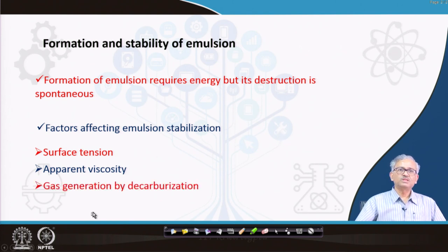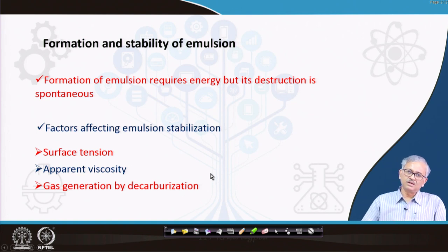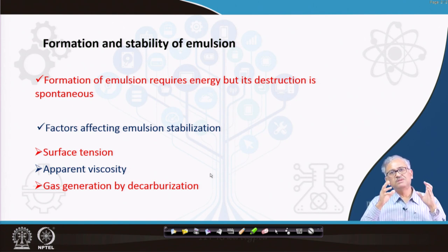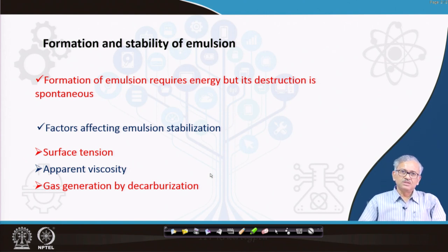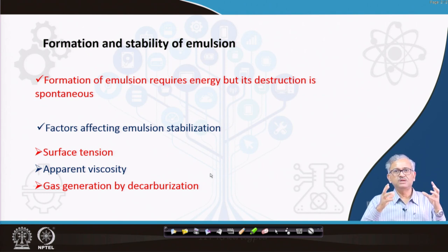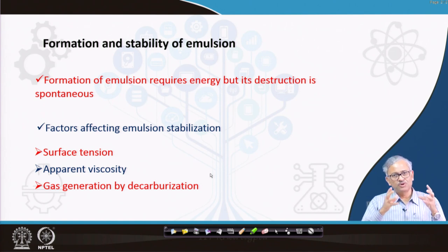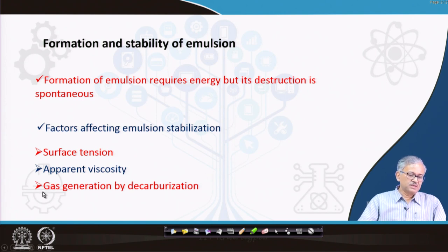The third and most important stabilization factor is gas generation by decarburization. When the bath is decarburized, CO bubbles form and stabilize the foam. Continuous supply of CO bubbles is needed because CO bubbles escape to the atmosphere. If you supply CO bubbles continuously, the emulsion always contains a significant amount of CO bubbles that stabilize it by buoyancy. Gas generation by decarburization is the most important stabilizing factor.